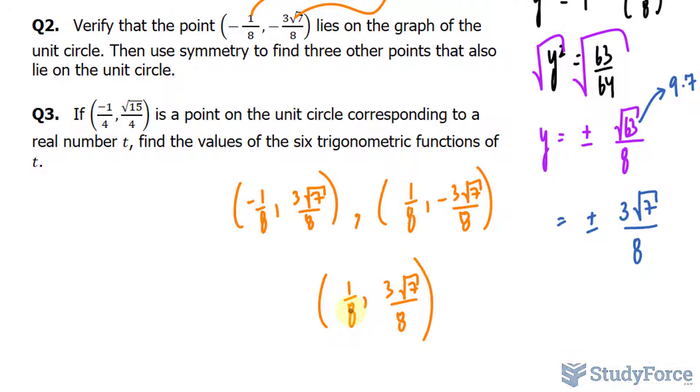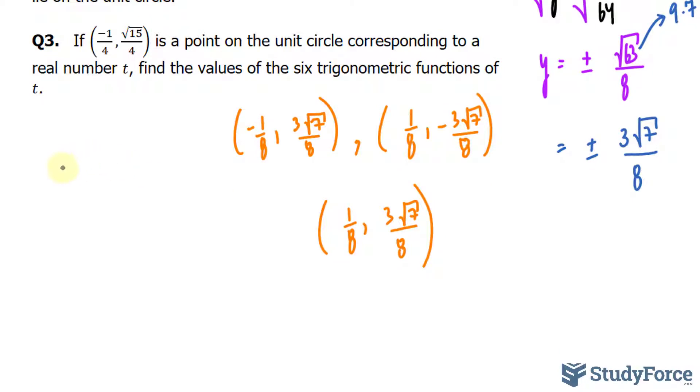Finally, in question 3, if we have the point shown right here and it is located on a unit circle corresponding to a real number t, find the values of six trigonometric functions of t. The six trigonometric functions are sine, cosine, tangent, and the reciprocal versions of each.